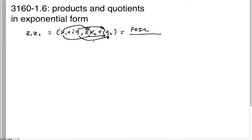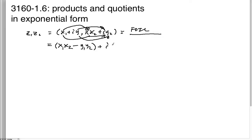And of course we find out that the real part is x1·x2 minus y1·y2, plus i of (x1·y2 plus x2·y1). That's the result of the FOIL process.